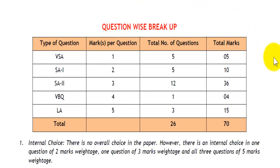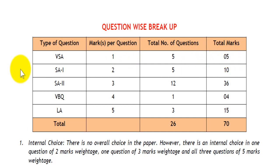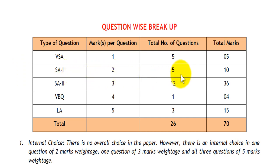Here is the question wise breakup which you can expect in the theory paper. First of all, there are the very short answer type of questions which carry 1 mark each. There will be 5 such questions totalling to 5 marks. There will be short answer 1 type of questions which carry 2 marks per question, and 5 such questions will be there in the paper totalling to 10 marks.